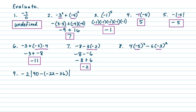On number eight we take care of exponents first. We have 4 times negative 5 squared: negative 5 times negative 5 is 25, so that's 4 times 25. Then minus 6 times negative 3 squared: negative 3 squared is 9, so minus 6 times 9. Next we multiply: 4 times 25 is 100 and 6 times 9 is 54. So we get 100 minus 54, which is 46.